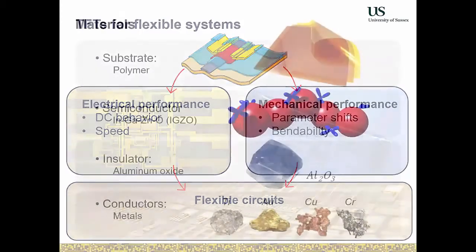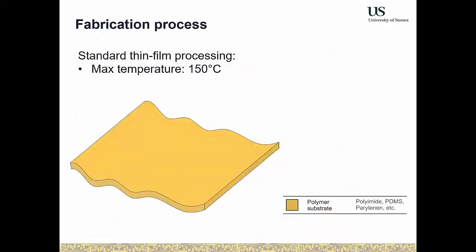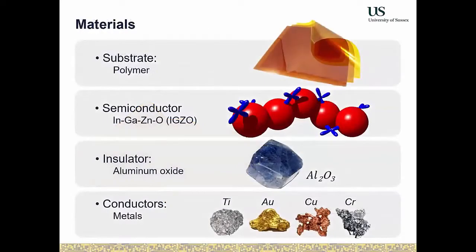We use a model system where transistors are fabricated using purely inorganic materials with clean room processing — no printing. We use various polymeric substrates: polyamide, PDMS, parylene, and others. Our semiconductor is always indium gallium zinc oxide, chosen because it provides good mechanical and electrical performance and can be deposited at low temperatures, compatible with temperature-sensitive substrates.